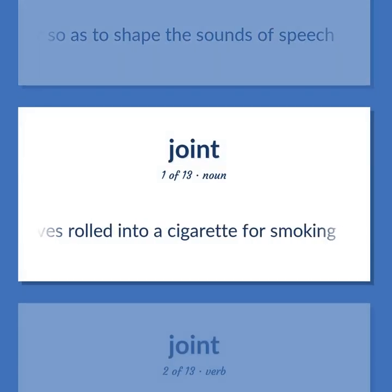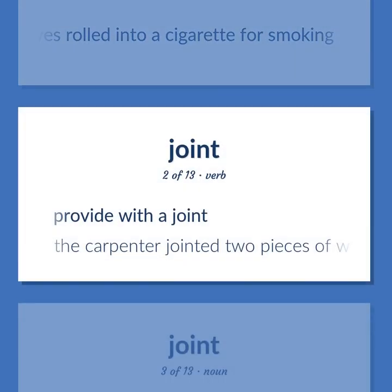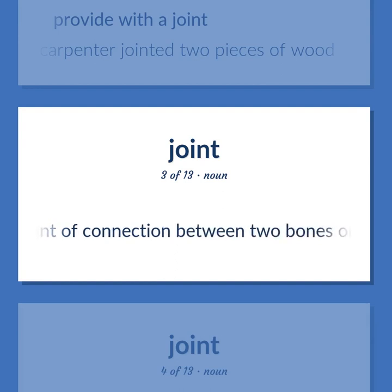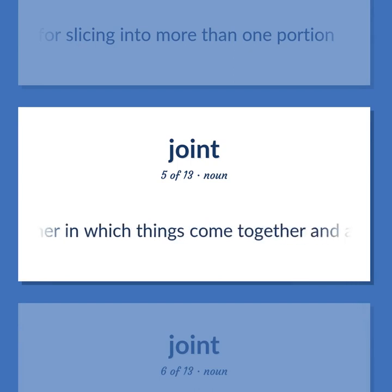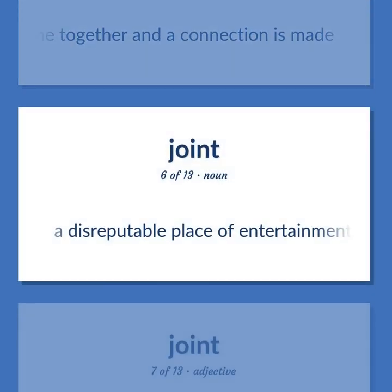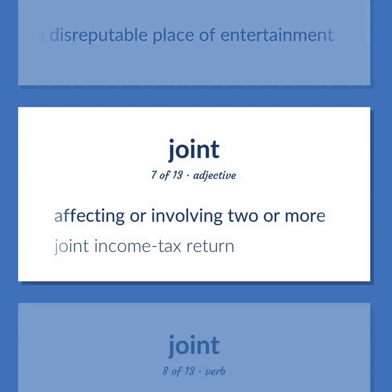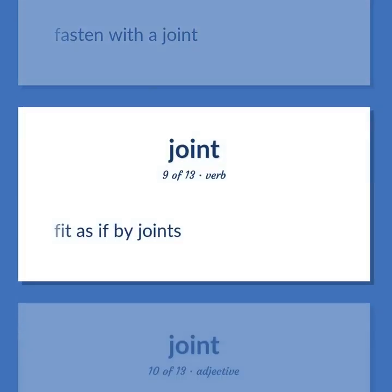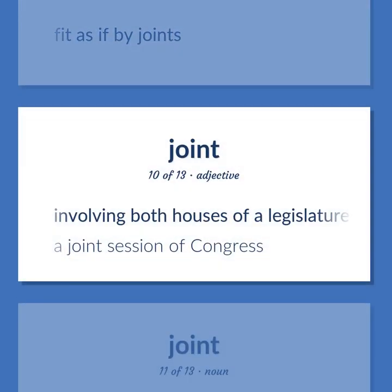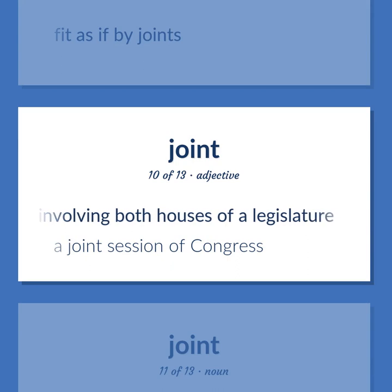Joint: Marijuana leaves rolled into a cigarette for smoking. Provide with a joint — the carpenter jointed two pieces of wood. The point of connection between two bones or elements of a skeleton, especially if it allows motion. A piece of meat roasted or for roasting and of a size for slicing into more than one portion. The shape or manner in which things come together and a connection is made. A disreputable place of entertainment. Affecting or involving two or more — joint income tax return. Fasten with a joint; fit as if by joints. Involving both houses of a legislature — a joint session of Congress.